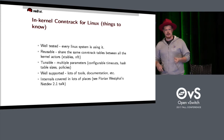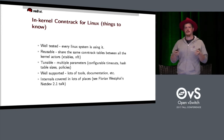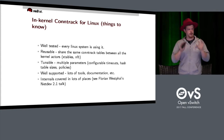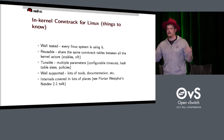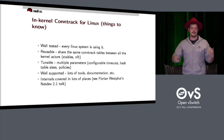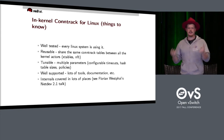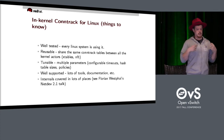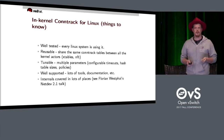In-kernel conntrack is well tested — every Linux system is using it. It's in routers, switches, phones, laptops — it's everywhere. It's reusable for kernel components, meaning the OpenVSwitch kernel module uses the same conntrack as the Netfilter modules — your xtables, NFT, all of that. It's tunable: we can change connection timeouts, hash table sizes, set policies. It's well supported with lots of tools and documentation. Florian Westphal did a great talk at NetDev 2.1 that I recommend.